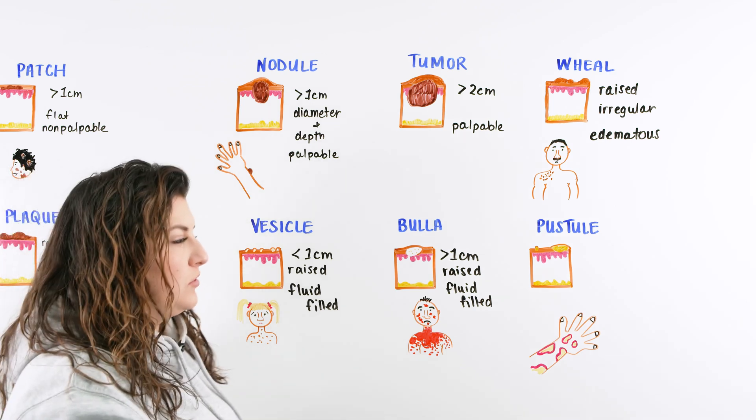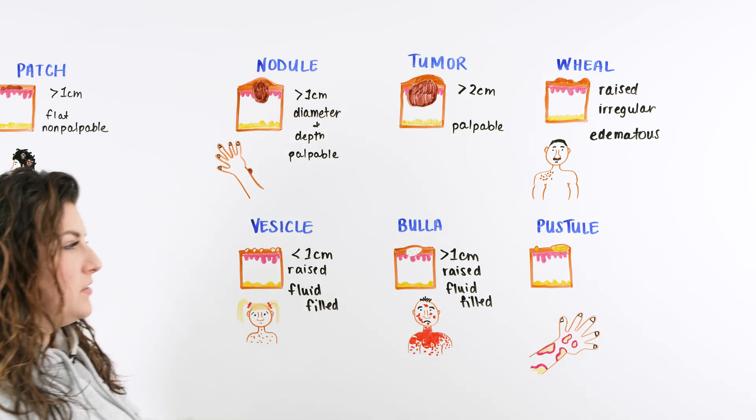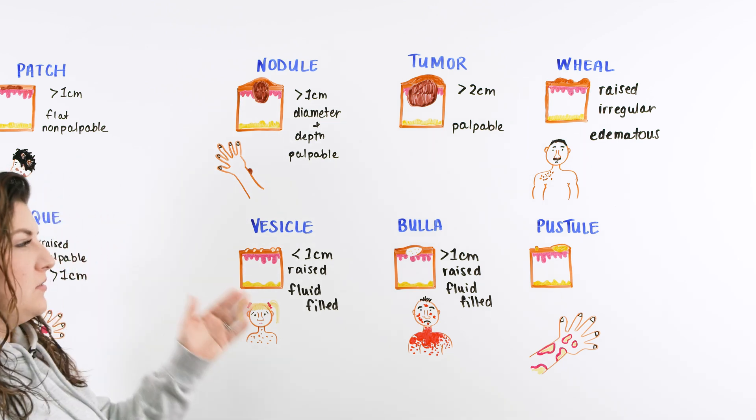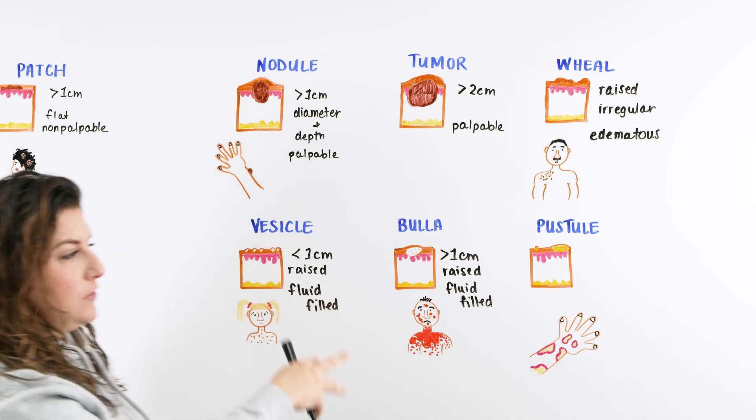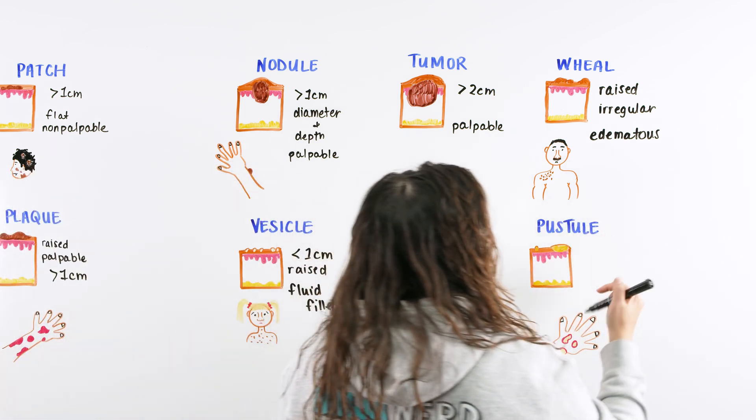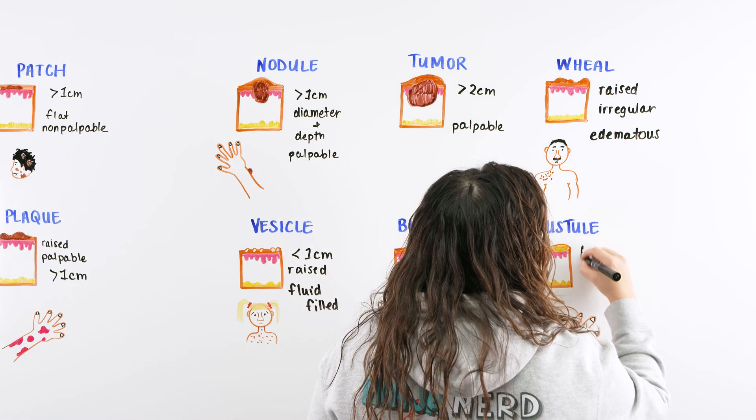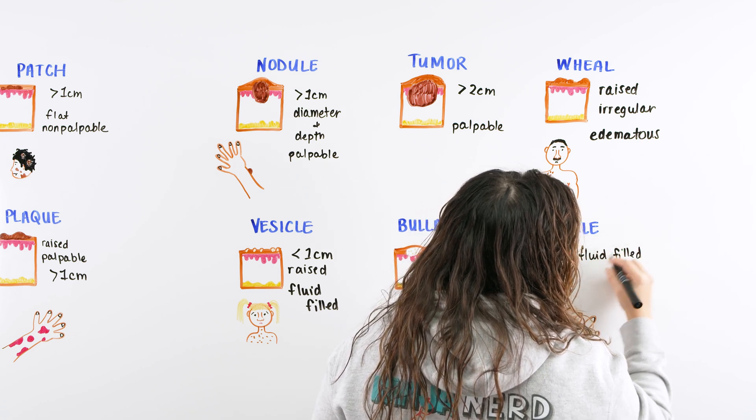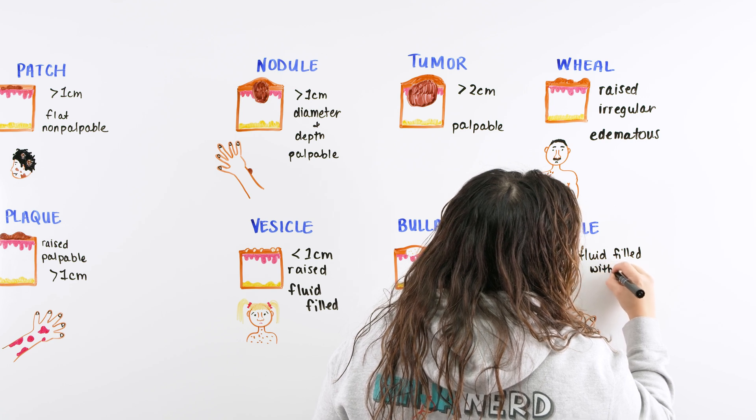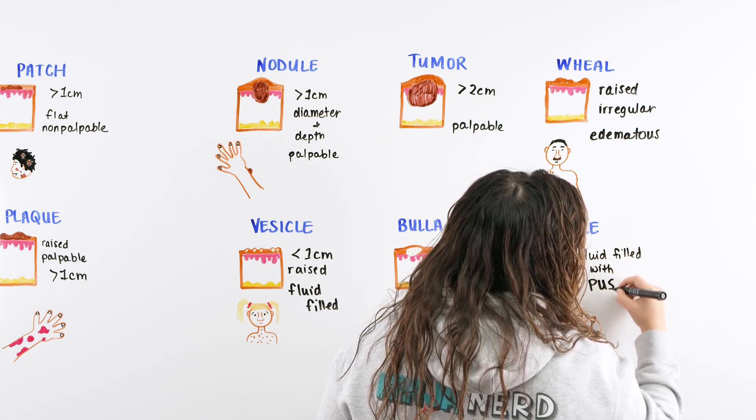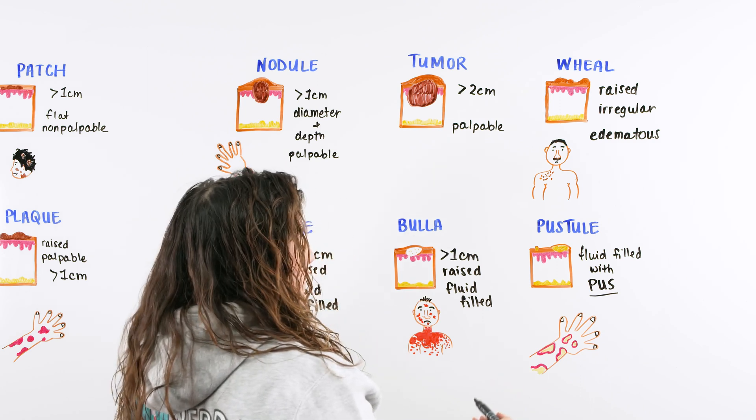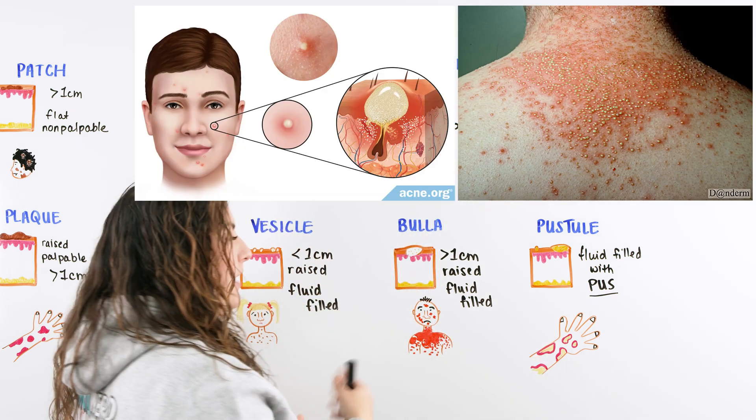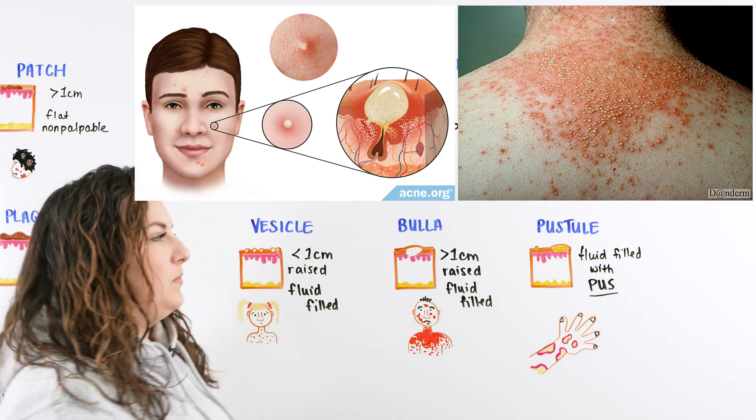Then we have our last one, which is I think the easiest of them all. It's a pustule. It's fluid filled with pus. It could be a vesicle or a bulla, but when it becomes filled with pus, we now have a pustule. So that purulent filling in there. That could be something like psoriasis that has become inflamed, filled with purulent fluid. It could be acne, anything like that, that would be filled with pus.